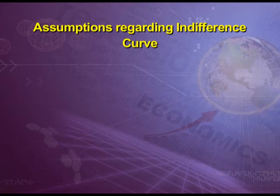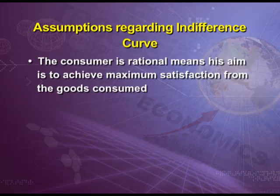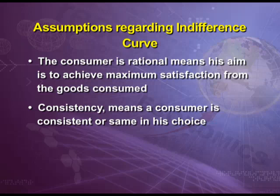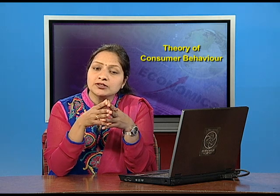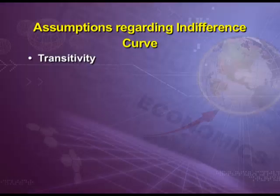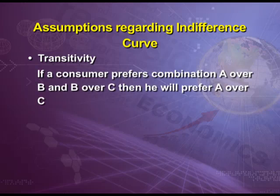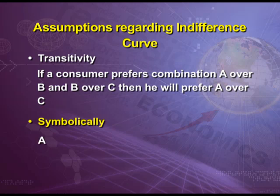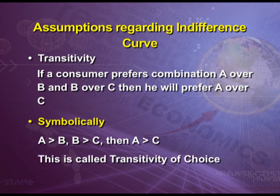Assumptions regarding indifference curve: first, the consumer is rational, meaning his aim is to achieve maximum satisfaction from the goods consumed. Second, consistency — a consumer is consistent in his choice. If a consumer prefers bundle A over bundle B in one period, he will not prefer bundle B over A in another period if the quantity of goods in the bundles remains the same. Third, transitivity — if a consumer prefers combination A over B and B over C, then he will prefer A over C. Symbolically, if A is greater than B and B is greater than C, then A is definitely greater than C. This is called transitivity of choice.